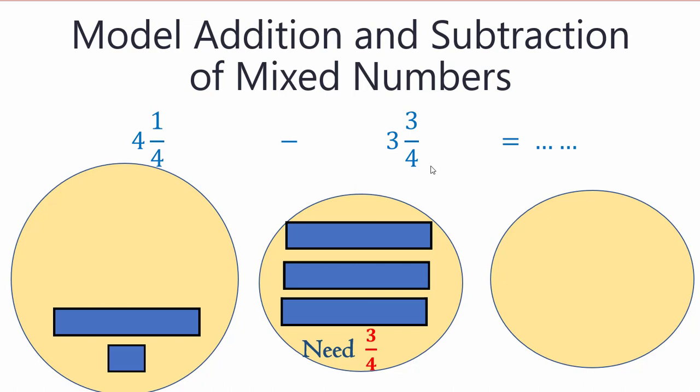Right, so we cannot take three fourths. What can we do? Oh, I have an idea. What about this whole, do you see it? What about breaking it into fourths? So break it into four fourths. Count them: one, two, three, four, and take three of these.